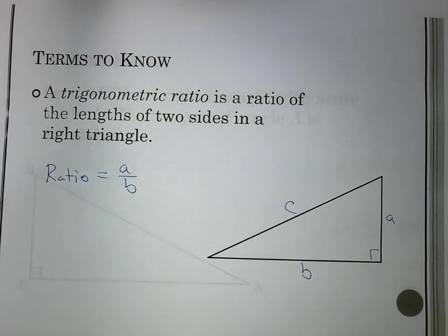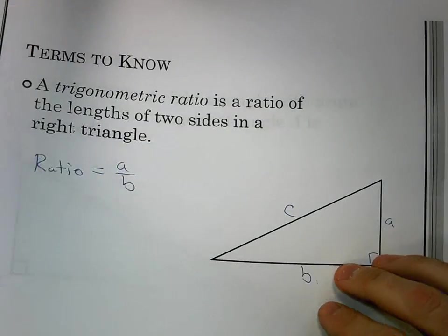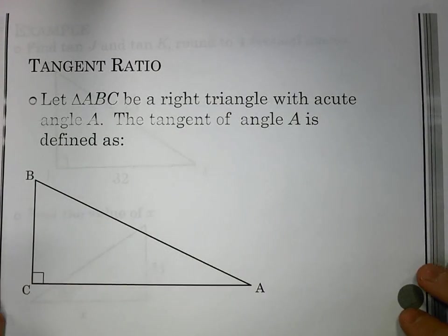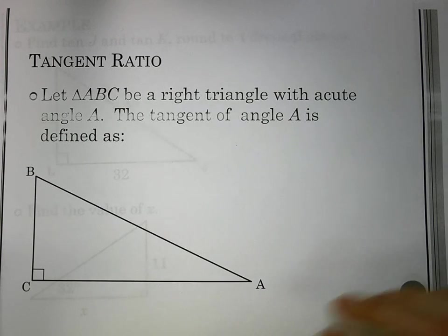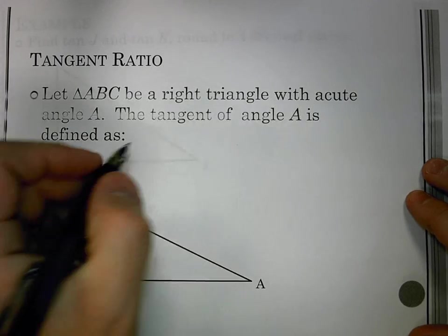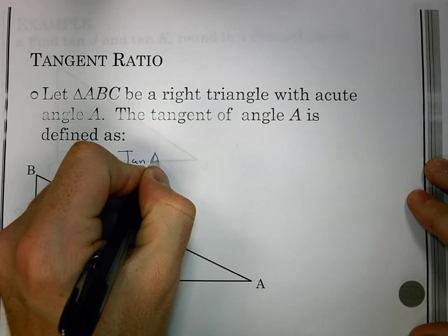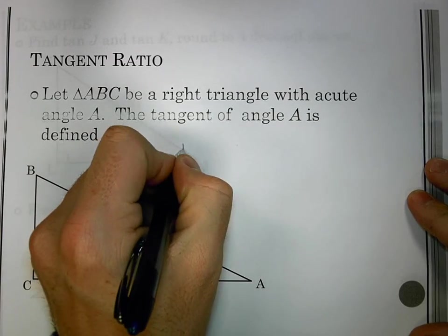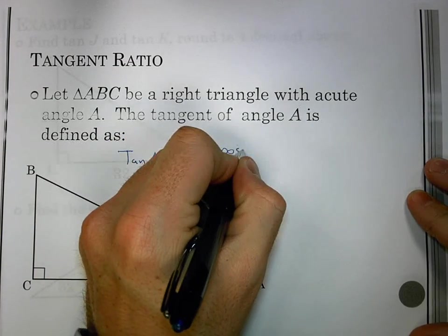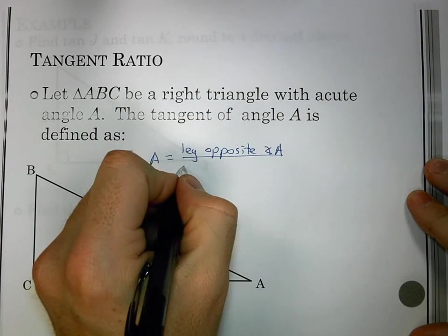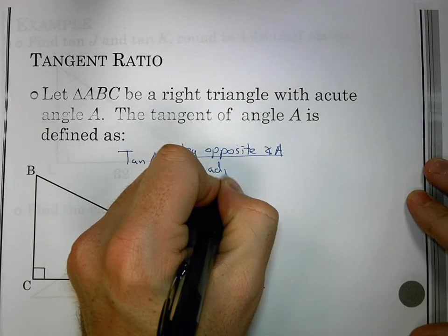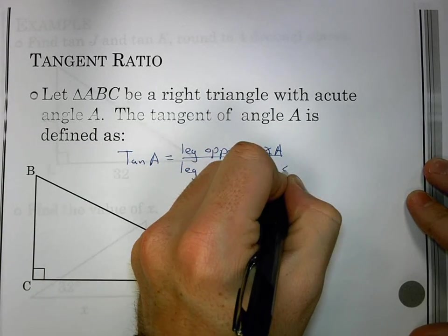Maybe I'm not talking about those two sides, but maybe the hypotenuse is included. It's just going to be a ratio, some relationship between those values. Our first one we have is tangent. Let triangle ABC be a right triangle with acute angle A. The tangent of angle A is defined as: tan A equals the leg opposite angle A